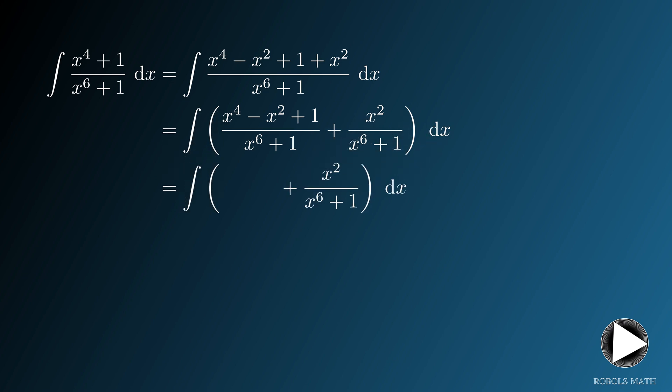Note that the first one easily simplifies to 1 over x squared plus 1 by taking advantage of the factored form of x to the 6 plus 1 as a sum of cubes.